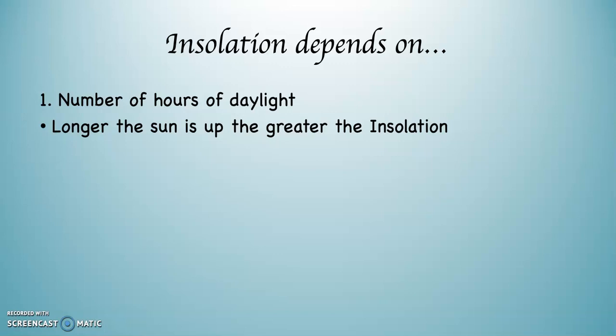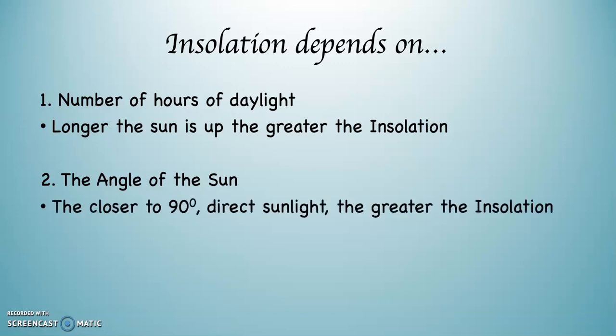The second thing that determines the amount of insolation any place on Earth receives is the angle of the sun, really the angle of the sun at noon. The closer the sun is to a 90 degree angle, in other words, direct sunlight, vertical rays of the sun, the sun directly over your head, the greater the amount of insolation. This is why the subsolar point matters. It's the one place on Earth that is receiving 90 degree angle sunlight, which is maximum solar radiation.